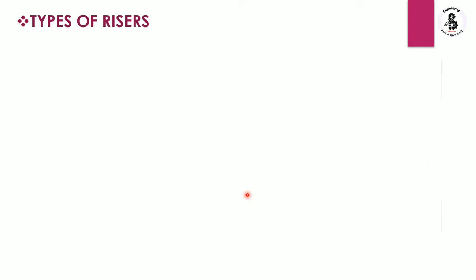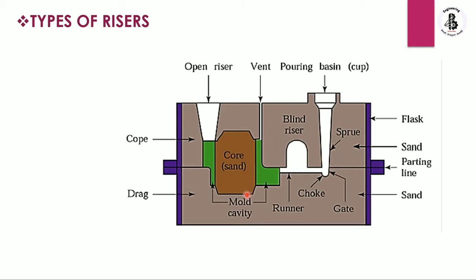Now, different types of risers are located in a sand casting process. You can see the different components — the cope part or upper part, and with the help of parting lines it is separated from the drag. The upper part is the cope and the lower part is the drag, and by these parting lines the sand casting is made. You can also see here a core, which is only used for making hollow castings.